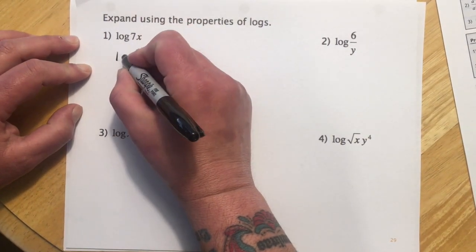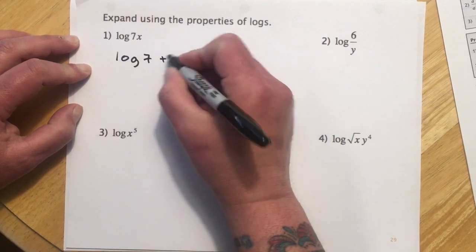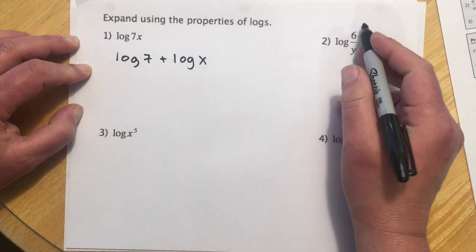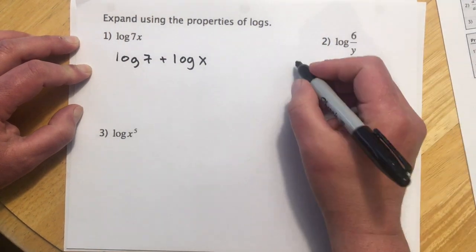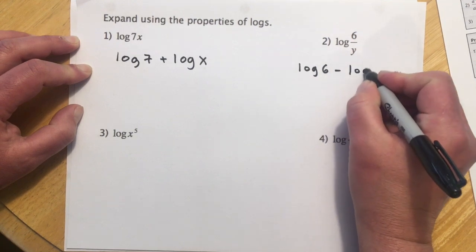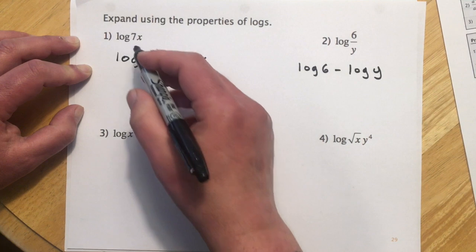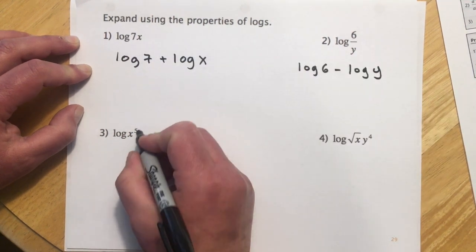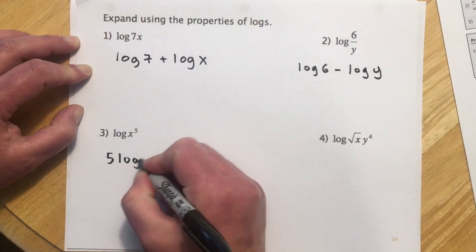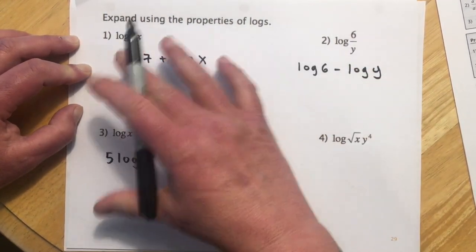For the first expanding example, since these are multiplying, it's an addition — that's property 1 — so log 7 plus log x. Number 2, they're dividing, so that's going to be a difference of the logs. And number 3 is showing property 3: when I have a power, then they multiply.